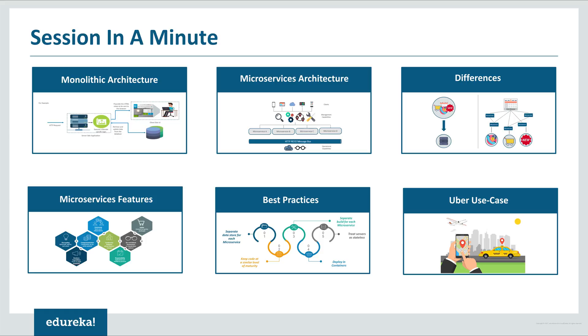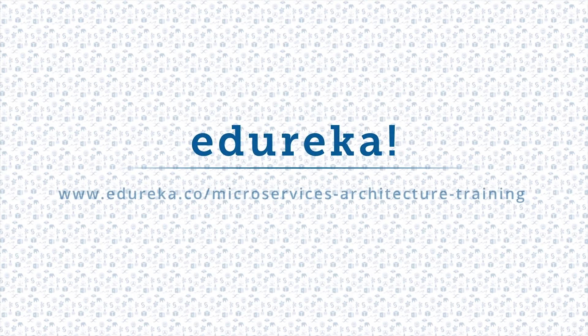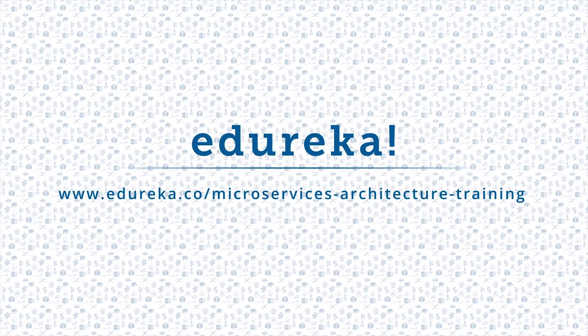Let me give a quick summary of what we discussed. We started with understanding monolithic architecture and its challenges. Then we went through microservice architecture and understood the differences between both. After that, we focused on the features of microservices and discussed best practices to design them. Finally, we compared Uber's previous framework to the present one and understood what made them change their architecture. Thank you for watching this video. Please like it, comment any doubts or queries, look out for more videos in our playlist, and subscribe to the Edureka channel to learn more. Happy learning!